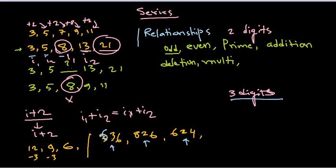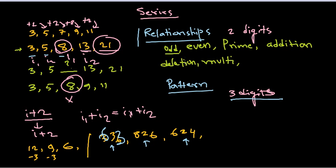Let's verify with the example. Take 636, 826, 624: 6 − 3 = 3, 8 − 6 = 2, 6 − 4 = 2. So subtracting the last digit from the first digit gives the middle digit. This is the pattern. In series problems, you need to identify the pattern — once you find it, it becomes super easy to calculate.